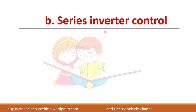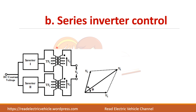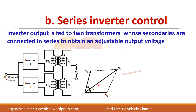The next is the series inverter control method. In this case, the inverter output is connected to a transformer — the primary of the transformer is connected to the inverter output while the secondaries of all the transformers are connected together. The secondary voltages get added — actually it is a phasor addition. You have V1 here and V2 here, and depending upon the phase difference you will get phi. The resultant voltage is VL.